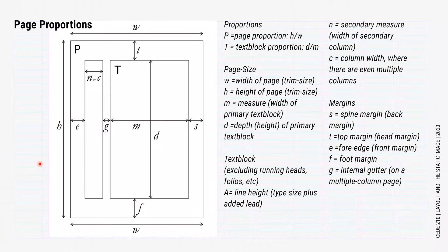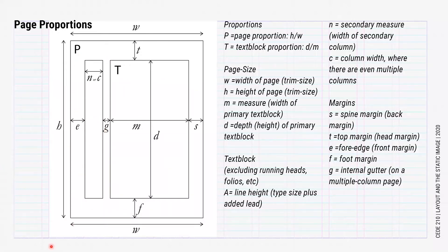Our goal in making a refined layout structure is to consider all the elements and have them all in proportion. Here are the variables you can consider when designing your page and grid system: the page size and its proportion, the text block size and its proportion, the widths of any secondary or tertiary columns, the margin widths and heights, as well as the gutter widths.